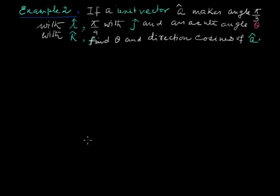Hello viewers, now we are sharing a sum regarding the cross product. Here unit vector a makes an angle pi by 3 with i cap, and makes an angle pi by 4 with j cap.